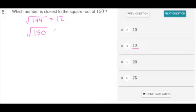so 150 is probably 12 point something, which means the square root of 150 is closest to 12.